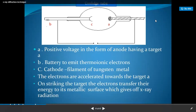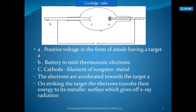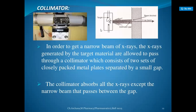In the X-ray tube diagram: A is the anode at positive voltage in the form of a node having the target; B is the battery for thermionic electrons; C is the cathode filament of tungsten metal. The electrons are accelerated towards the target. Upon striking the target, the electrons transfer their energy to its metallic surface, which gives off X-ray radiation.